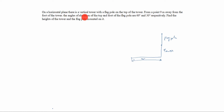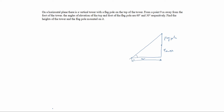The angle of elevation of the top and foot of the flagpole are 60° and 30°. Foot means bottom — don't confuse, foot means bottom. The angle of elevation of the top of the flagpole is 60° and the bottom of the flagpole is 30°. So we draw the line: top of the flagpole is 60°, bottom is 30°.